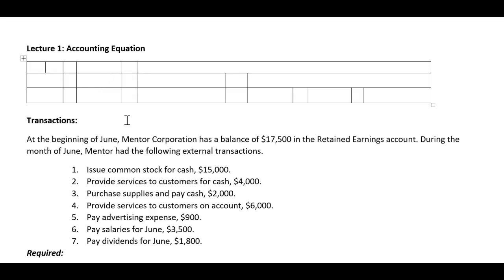Let's discuss the basics of accounting. We're going to begin with the accounting equation, also known as the financial position. In financial accounting, basically everything that truly impacts this equation should be recorded and reported if we can place it into a monetary unit — here in the United States, that would be the US dollar. So what is the financial position of a company, or the basic underlying component that really is the basis for financial accounting?